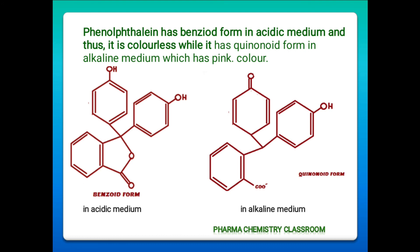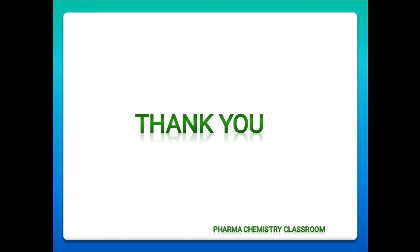After the equivalence point, the excess drop of sodium hydroxide coming from the burette makes the conical flask alkaline in nature. Thus the benzenoid form, which is colorless, converts into the quinonoid form, which is colored — that is, pale pink colored. This is how we get the endpoint in acid-base titration when phenolphthalein is used as an indicator. This is the Quinonoid Theory of acid-base indicators. Thank you for watching.